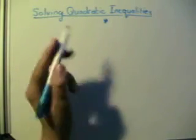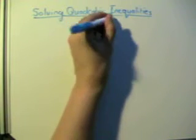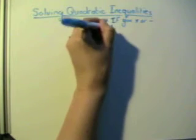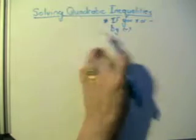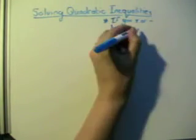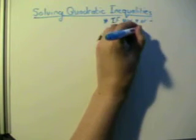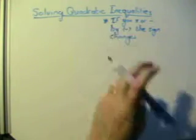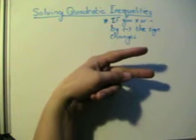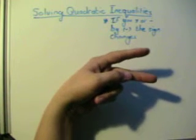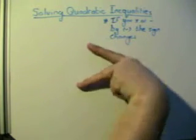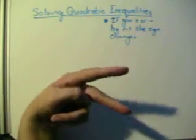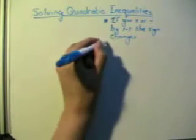The first extra thing is: if you multiply or divide by a negative number — same as with the linear inequalities — the sign changes. So if you remember with linear inequalities, if I multiply or divide by negative one, two, or three, then 'smaller than' becomes 'bigger than', or 'bigger than or equal to' becomes 'smaller than'.